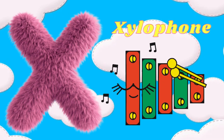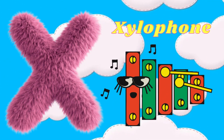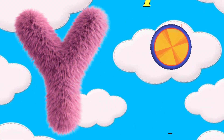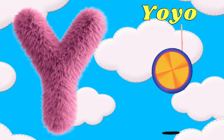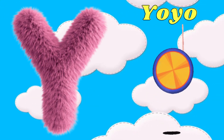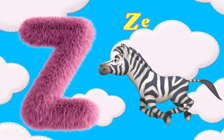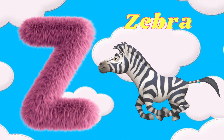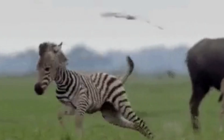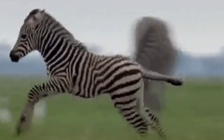X is for Xylophone. X-Xylophone. Y is for Yo-yo. Y-Y-Yo. Z is for Zebra. Z-Z-Zebra. Yay!